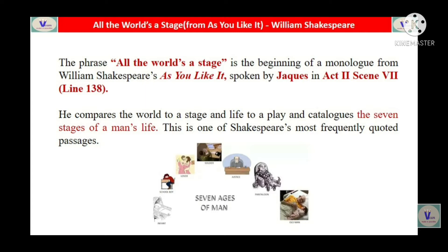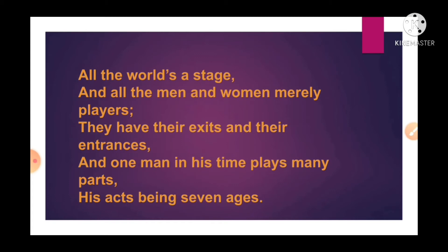Shakespeare compares the whole world to a stage and life to a play, and catalogues the seven stages of man's life. All the men and women are players on that stage, and he categorizes the seven stages of man's life from birth to death. This is one of Shakespeare's most frequently quoted passages.